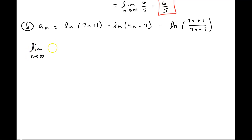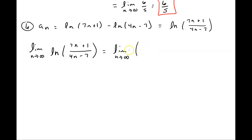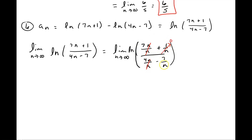We have the limit of the natural log of (7n + 1) over (4n − 7). We'll follow the same principle as before and divide out the highest power — in this case n. So: (7n/n + 1/n) over (4n/n − 7/n). The n's cancel, the 1/n terms go to 0, and we're left with the natural log of 7 over 4 as our limit for this particular example.